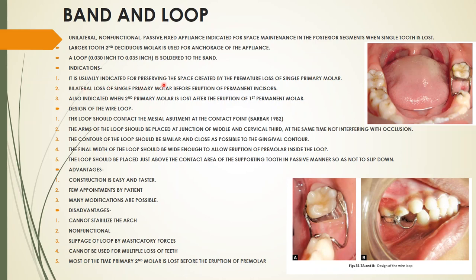The indications for band and loop: first, preserving the space created by premature loss of a single primary molar, specifically the first primary molar. Second, in case of bilateral loss of a single primary molar before the eruption of the permanent incisors, two band and loops are used — one on each side.